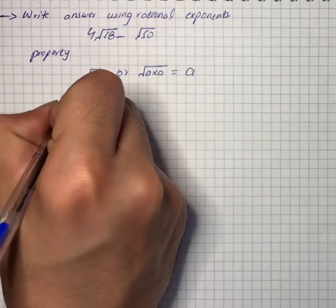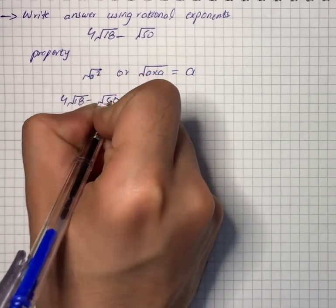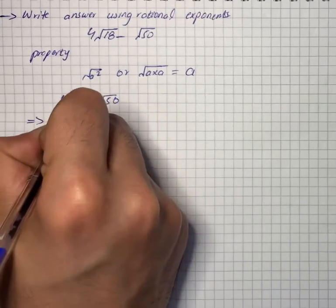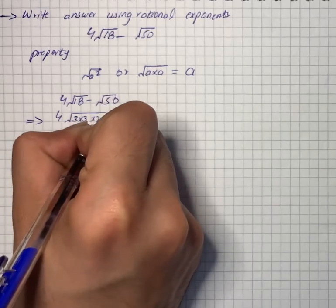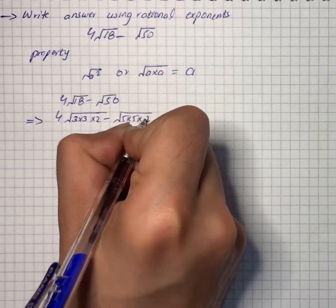We have 4√18 - √50. We will open up the stuff under the root. We have 3 × 3 × 2 minus 5 × 5 × 2.